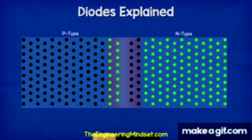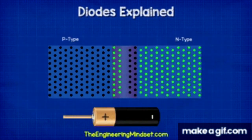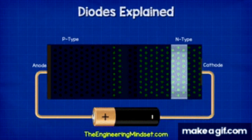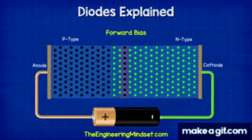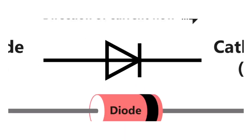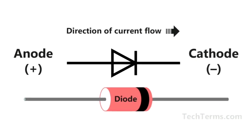When a diode is forward biased, the positive terminal of the voltage source is connected to the p-type region (anode), and the negative terminal is connected to the n-type region (cathode). This forward bias reduces the potential barrier at the junction, allowing majority charge carriers - electrons in the n-type and holes in the p-type - to move across the junction, resulting in current flow.